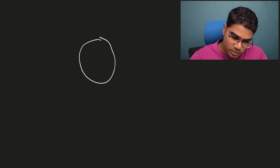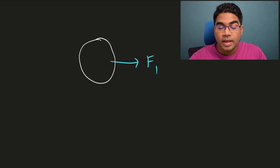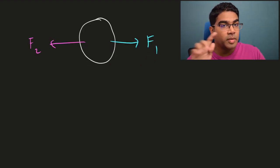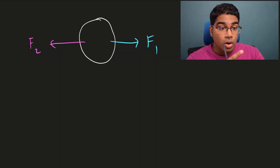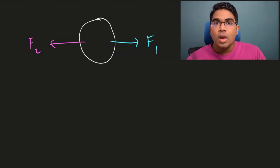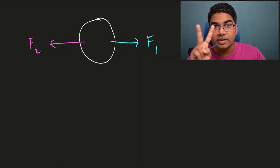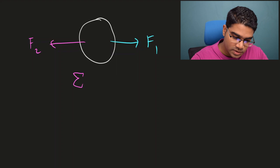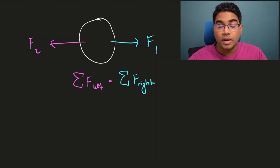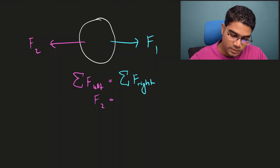Let's say we had an object with only two forces acting on it: one force towards the right, F1, and another force towards the left, F2. As long as this object is not accelerating — either stationary or moving at constant velocity — there is no resultant force, meaning the forces are in equilibrium. So the sum of forces acting to the left equals the sum of forces acting to the right, meaning F2 equals F1.